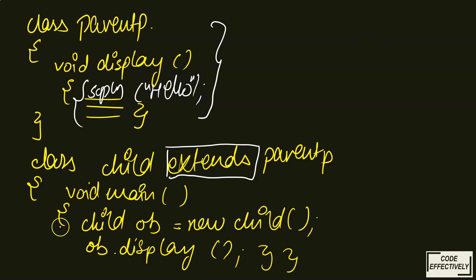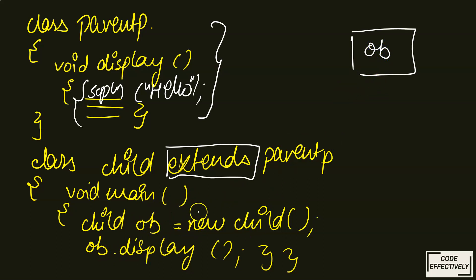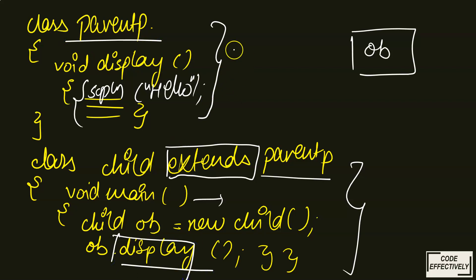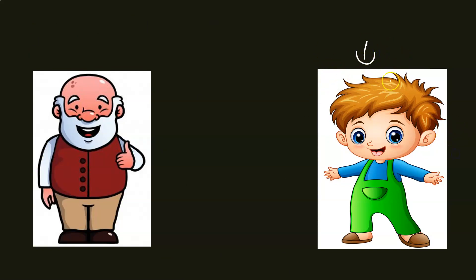Now we can easily access the methods of the parent class, all because of the single keyword 'extends'. When the Java compiler runs, it creates an object of the child class and calls 'ob.display'. The child class first looks in its own class whether the display method exists. Since only 'void main' is there, no display method is found, so it goes to the parent class because of the 'extends' keyword — and finds the display method there, returning the output 'Hello'.